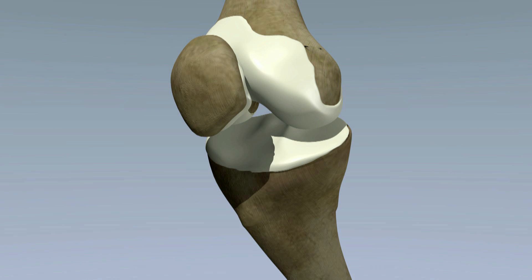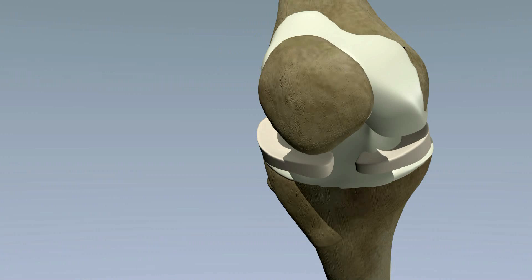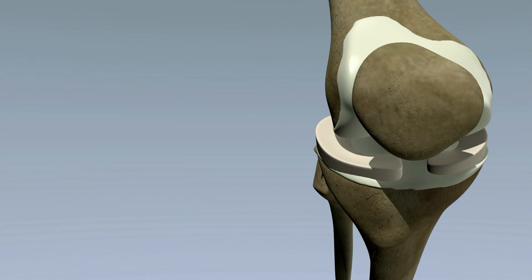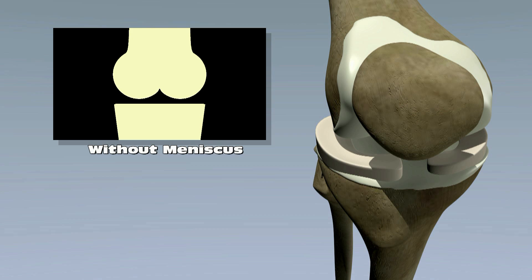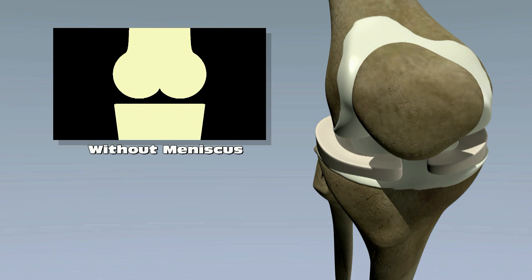The meniscus is a shock-absorbing cartilage structure. There are two menisci in a healthy knee. Each meniscus helps to share the load as the femur moves back and forth on the tibia. It distributes the weight of the body across a wider surface area because the meniscus is shaped to fit the round ends of the condyles.